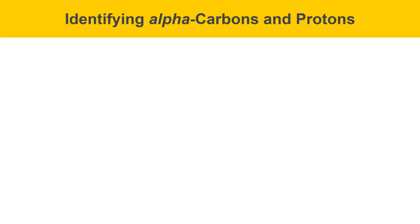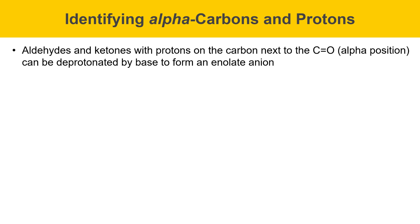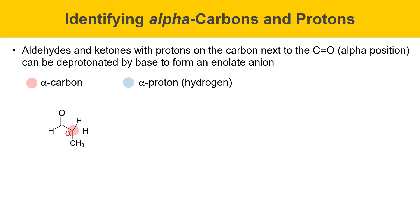The first step in approaching an aldol reaction is to identify alpha carbons and protons. Aldehydes and ketones with protons on the carbon next to the carbonyl, the alpha position, can be deprotonated by a base to form an enolate anion. As an example, we'll start with propanol. Here's the alpha position of propanol — I'll mark the alpha carbon with a red circle — and you want to look at that carbon and see if there are any protons attached to it, which I'll mark in a blue circle. These are alpha protons. Propanol has two alpha protons, and either one can be deprotonated by a base to form an enolate.